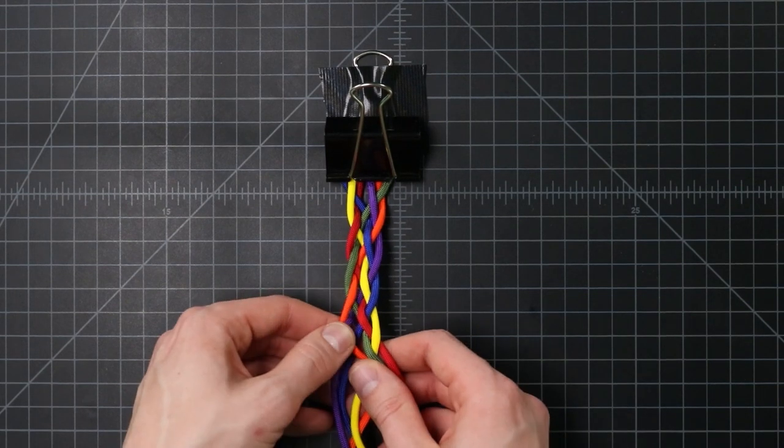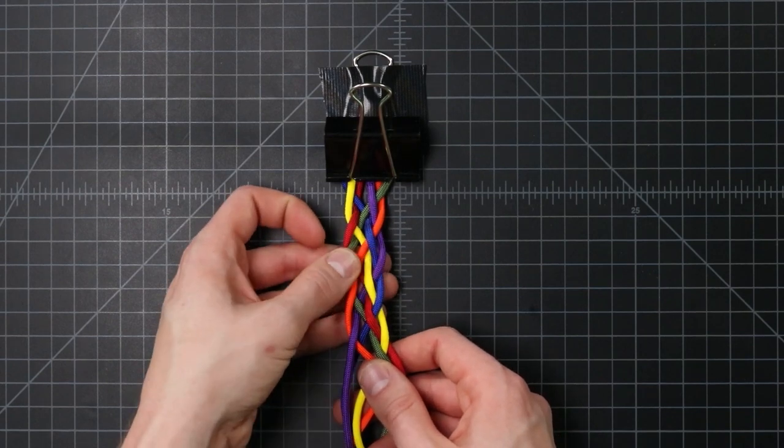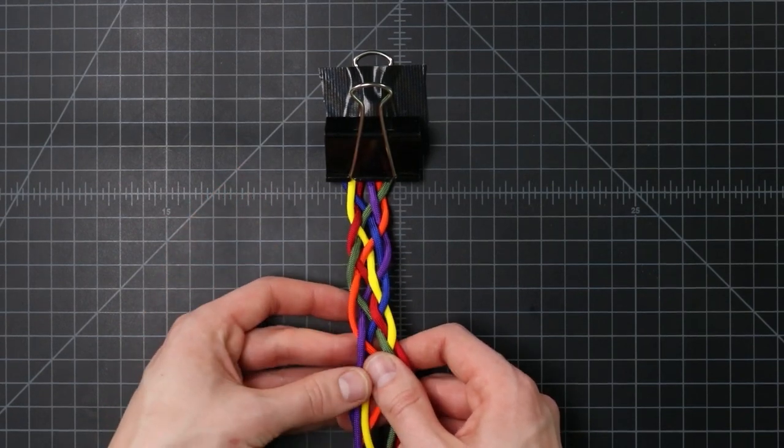When using this many cords, you'll often have to go back and tighten to make sure that all of your cords are in the right places and your braid looks even.